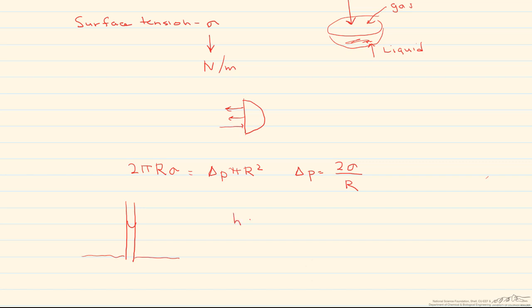A force balance gives us that h, which is the height above the water level, is equal to 2 times the surface tension times the cosine of theta, divided by the specific weight times the radius.